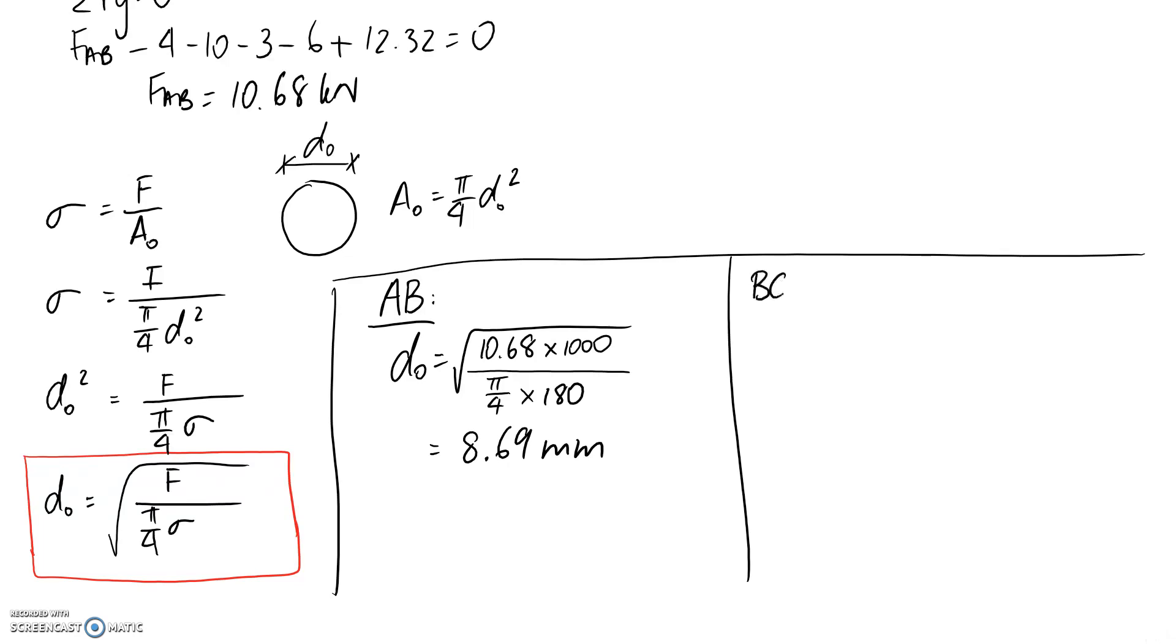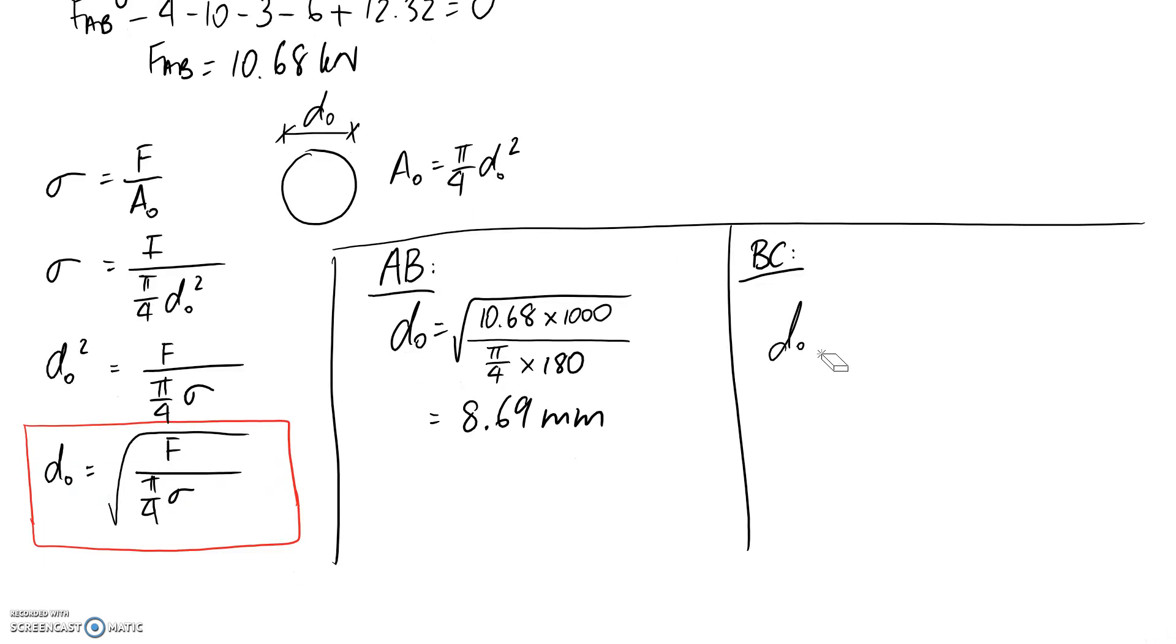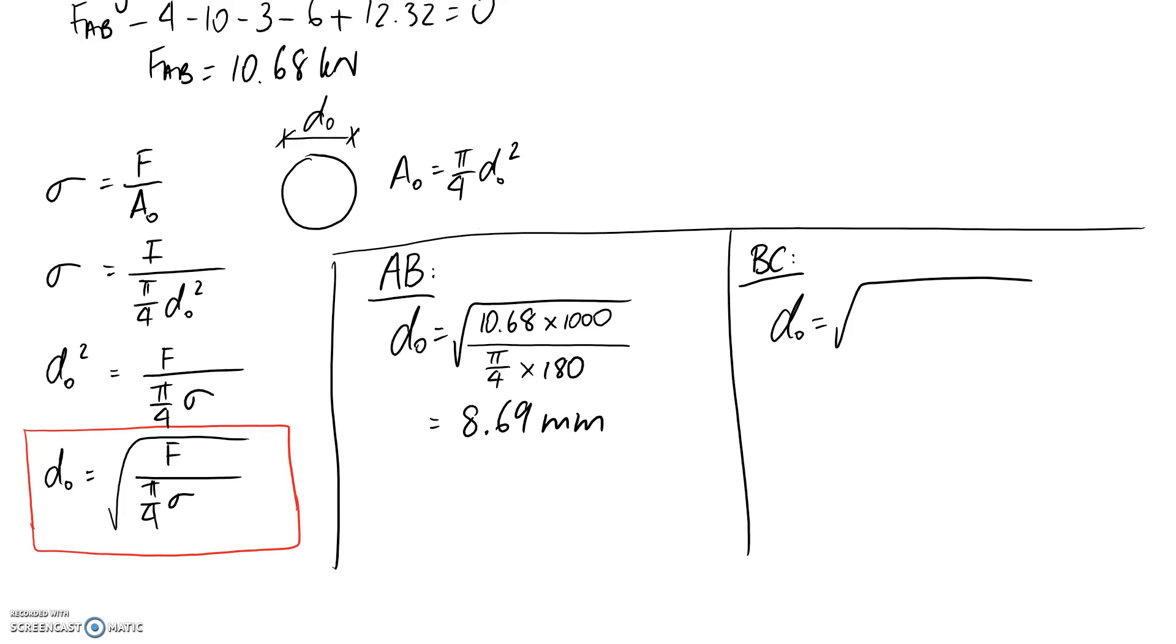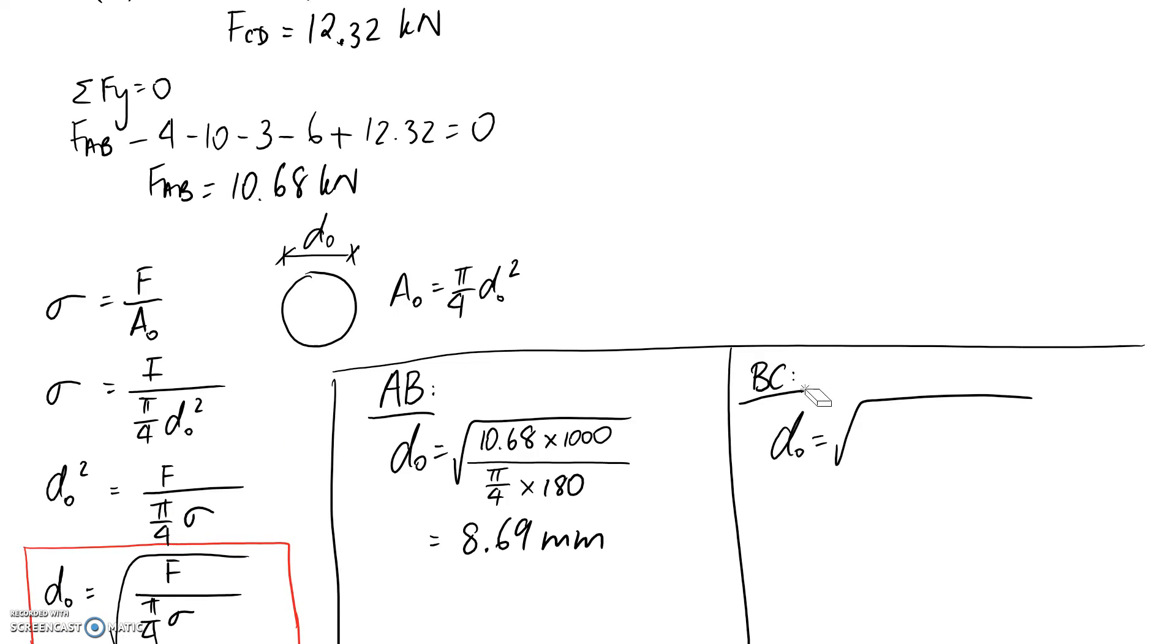We can do the same thing for CD. The force for CD we worked out is 12.32 times 1000 to put it into newtons. We divide by π/4 multiplied by our stress restriction, again 180 megapascals. This comes out to be 9.33 millimeters.